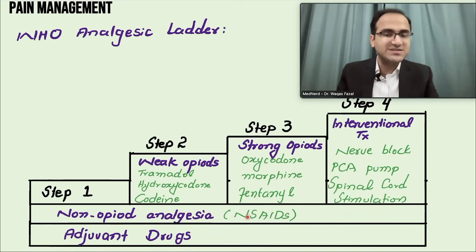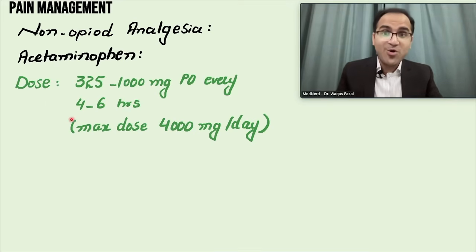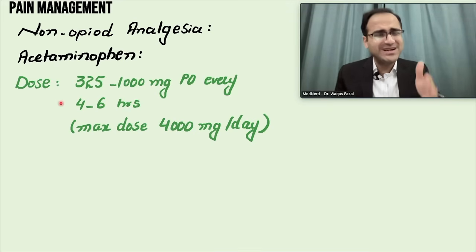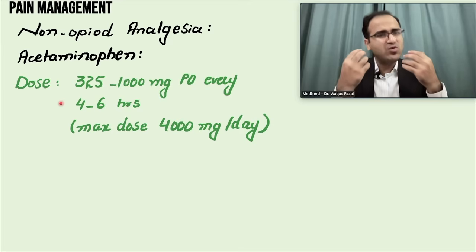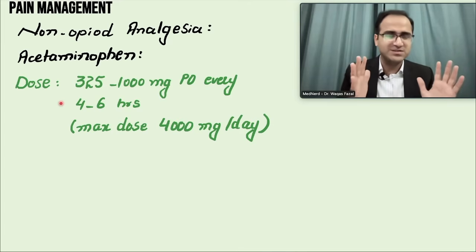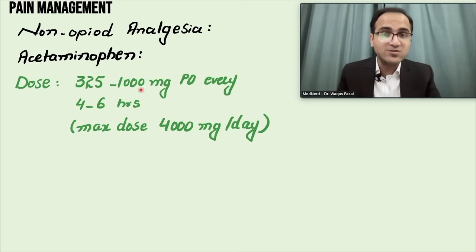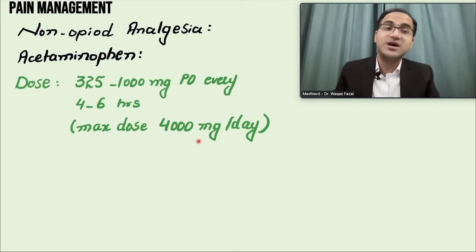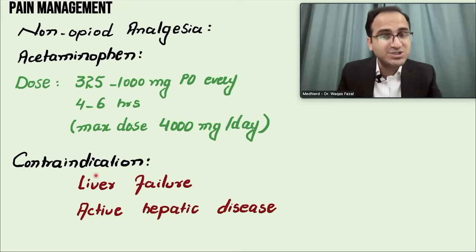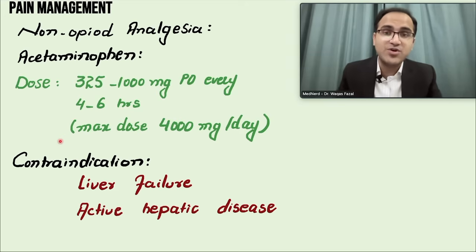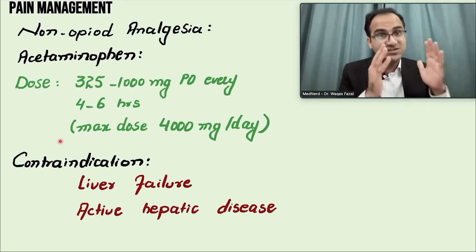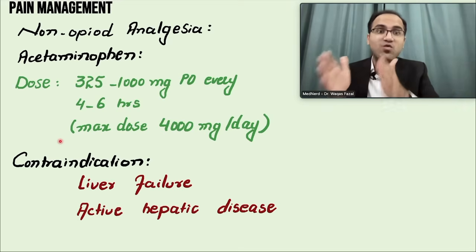Non-opiate analgesia and adjuvant drugs form the basis of the whole ladder. Acetaminophen (paracetamol) is very important — it is a very safe drug, can be given in pregnancy, and is suitable for many patients except those with liver disease. The dose is 325 to 1000 mg orally every 4 to 6 hours, with a maximum of 4000 mg per day. Exceeding this risks hepatotoxicity. Acetaminophen is not an NSAID and has no anti-inflammatory properties but is a good analgesic.